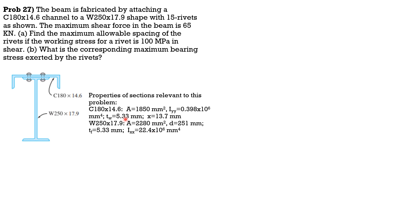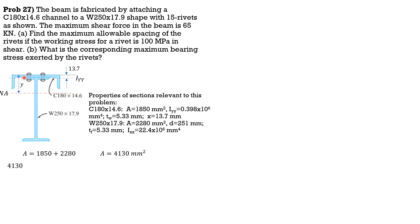We need the moment of inertia with respect to the neutral axis, so let's locate the neutral axis of the entire section first. We call that distance y from the top. The total area is: area of channel 1850 plus area of wide flange 2280, giving a total area of 4130 mm². By Varignon's theorem: 4130 × y = 1850 × 13.7 plus 2280 × (251/2 + 5.33).